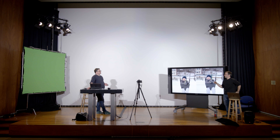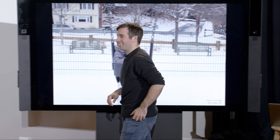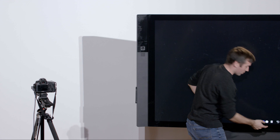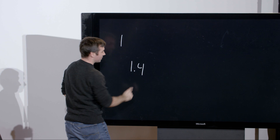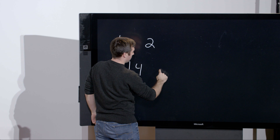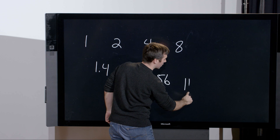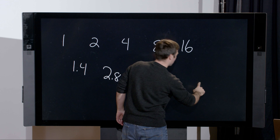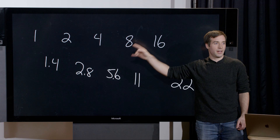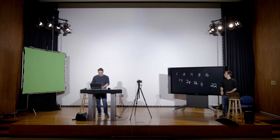An easy way to remember the f-stop scale: start with 1 and 1.4, then keep doubling. So 1 doubles to 2; 1.4 doubles to 2.8; 2 doubles to 4; 2.8 doubles to 5.6; 4 to 8; 5.6 to approximately 11; 8 to 16; 11 to 22. That covers most lenses you'll operate. Just remember 1 and 1.4 and keep doubling — quick and dirty.